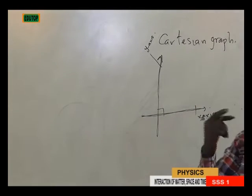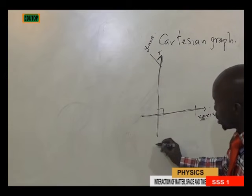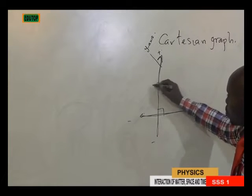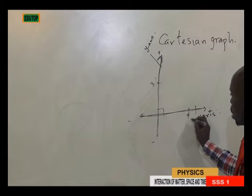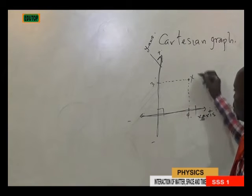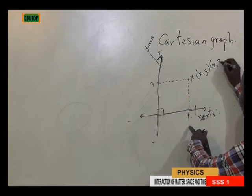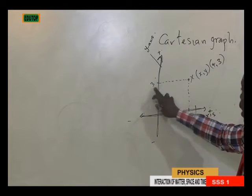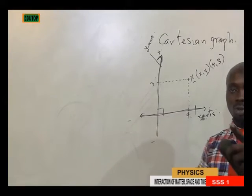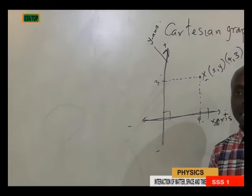On your Cartesian graph, you can detect the position at which an object is. On the x-axis you have a positive side and a negative side; the same for the y-axis. If your y value is at point 3 and your x value is at point 4, and you draw broken lines to meet each other, this gives the position. That position is at coordinates (4, 3), meaning x is 4 and y is 3. Position must be defined with respect to two particular lines: your y-axis and your x-axis on a Cartesian graph.